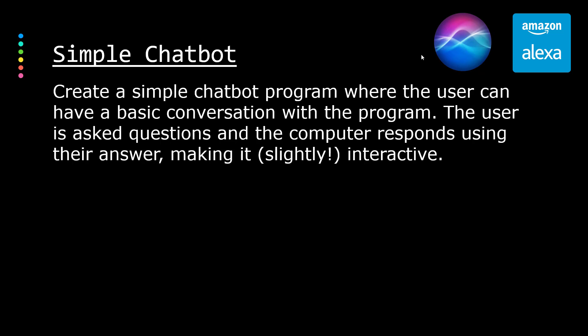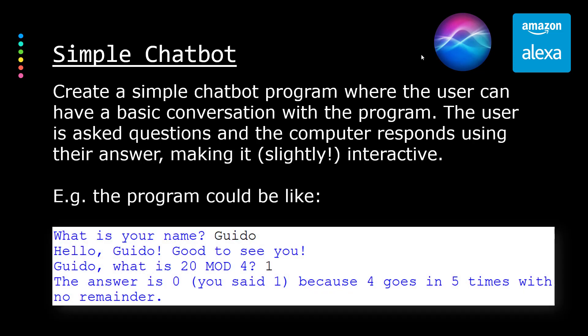You can ask Alexa and Siri pretty much anything and they reply with what seems like a customized message, but they rely on complicated things like natural language processing, machine learning, and data from loads of different sources. Right now we're just creating something that repeats stuff back — a simple chatbot where the user can have a basic conversation with the program. In blue we have the computer's output and in black we have the input.